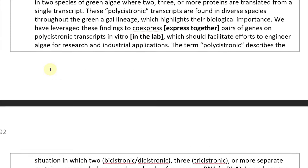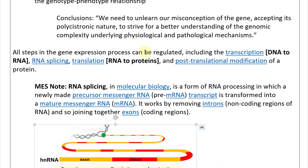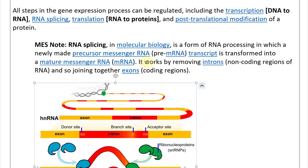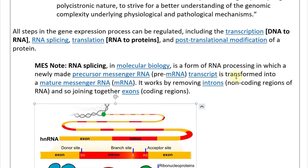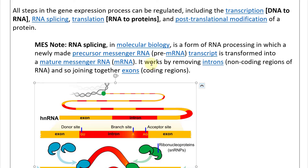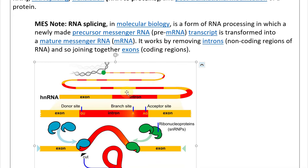All steps in the gene expression process can be regulated — including transcription (DNA to RNA), RNA splicing, and translation (RNA to proteins) — as well as post-translational modification of a protein. RNA splicing in molecular biology is a form of RNA processing in which a newly made precursor messenger RNA (pre-mRNA) is transformed into a mature mRNA by removing introns (non-coding regions of RNA) and joining together exons (coding regions).